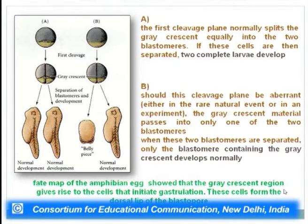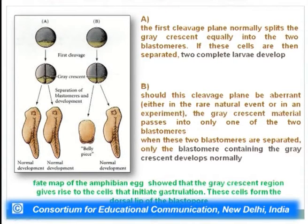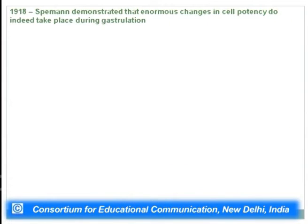Spemann examined the fate map of the frog embryo and found that the first cleavage plane normally splits the gray crescent into two blastomeres. But when he tied in that manner, the gray crescent was only present on the dorsal side. When these two blastomeres are separated, only the blastomere containing the gray crescent develops normally. He speculated that the gray crescent contains certain cytoplasmic determinants with the potential to give rise to the normal embryo. The fate map showed the gray crescent region gives rise to cells that initiate gastrulation and form the dorsal lip of the blastopore.